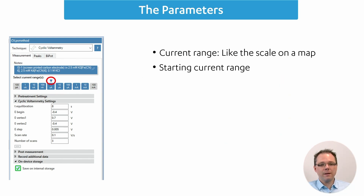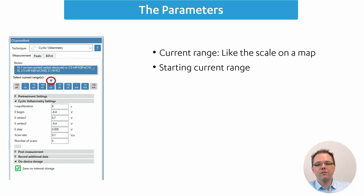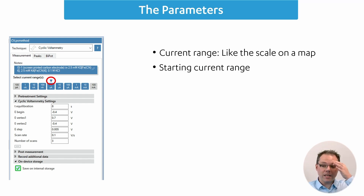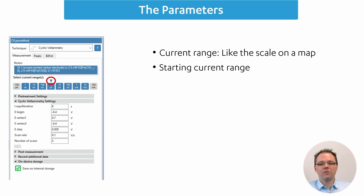For the current range, there is a little triangle — you may not have noticed it. The triangle tells you where you start, i.e., which current range is your starting current range. All the blue current ranges are available for autoranging, so the potentiostat will try to select the best one for your measurement. The triangle indicates the current range where the measurement starts.